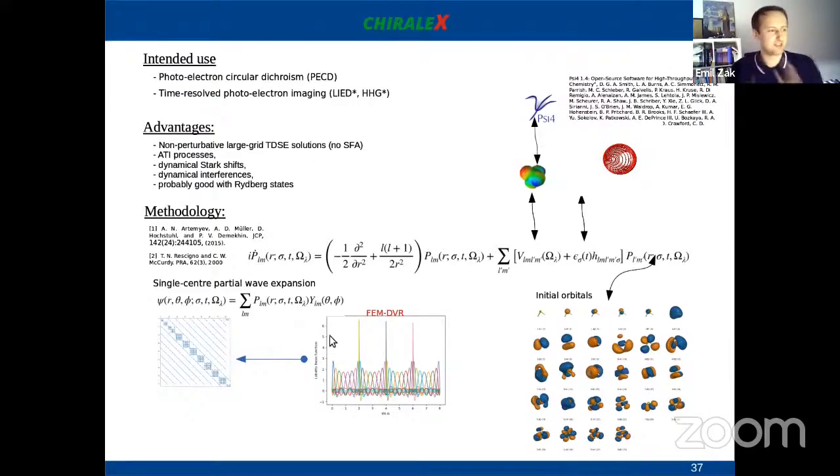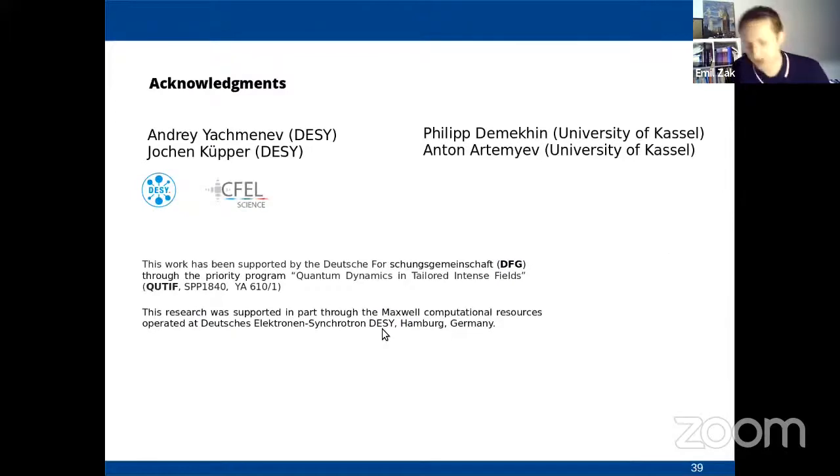We can put in either initial orbitals, initial electron orbitals from our calculations or from electronic structure package, and project it onto our bases. Future directions for the code is that I would like to put spin into action and produce spin-resolved electron dynamics, like spin polarization in PECD for instance, and also couple it with nuclear motion, like in the photoexcitation circular dichroism, where you produce vibronic wave packets and it interacts, it interferes with the outgoing electron wave. If you have any questions, I would be really happy to discuss it after the talk. Big thanks to Andrei Yachmenev and Joachim Cooper from C-FEL and DESY. Also thank you to Filip Benekhin and Anton Artemiev for very helpful discussions regarding the CHIRALICS code. I thank you for coming today and for your attention. Happy to answer your questions.